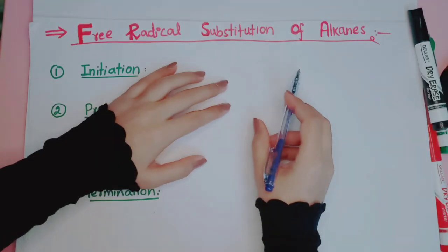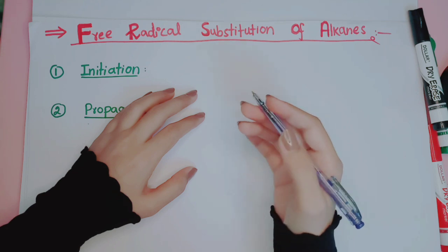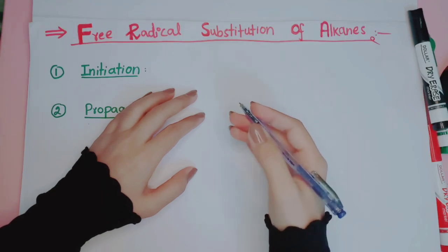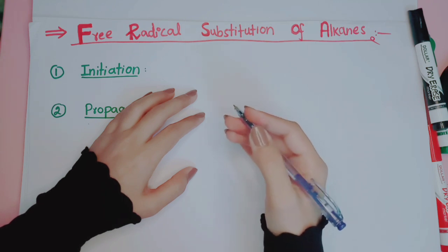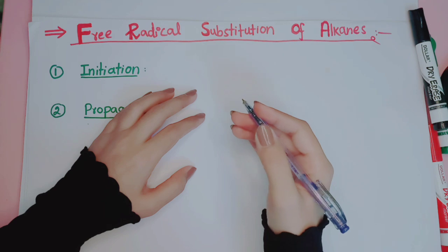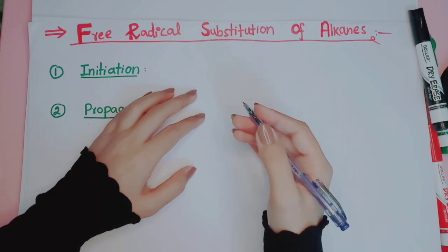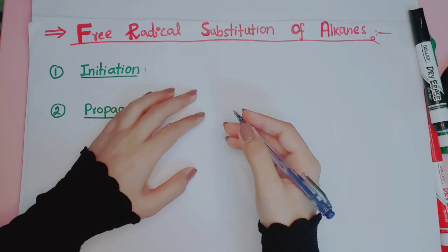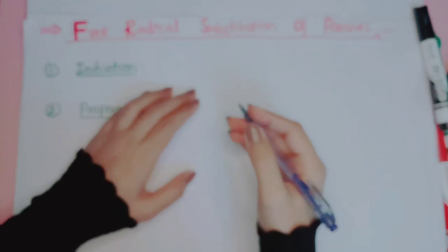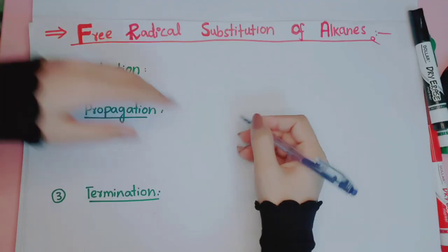In the initiation step, we take our halogen — bromine or chlorine — and expose it to light. When we do that, the bond between the two bromine atoms breaks, and as a result we get bromine atoms each with seven electrons, called free radicals of bromine. Bromine originally had eight electrons; after losing one via the photon it now has seven. So it was stable before but now it is very reactive and will try to get stable by reacting with other species.